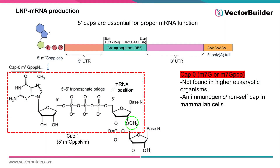The first thing we will discuss is the choice of mRNA capping method. 5' caps are essential for proper mRNA function in eukaryotes. In vivo, the 5' cap is added in a series of enzymatic reactions co-transcriptionally. The cap structure consists of a methylated guanosine nucleotide attached to the transcript through a 5' to 5' phosphate linkage.